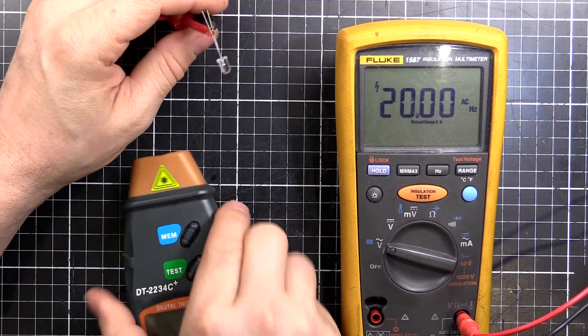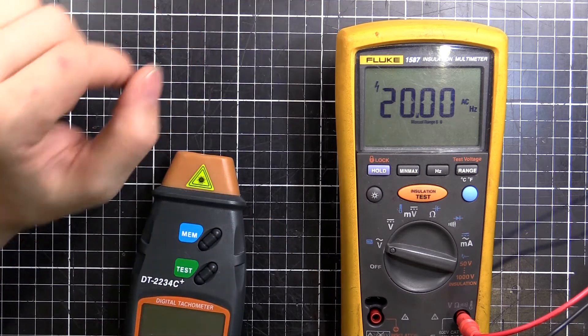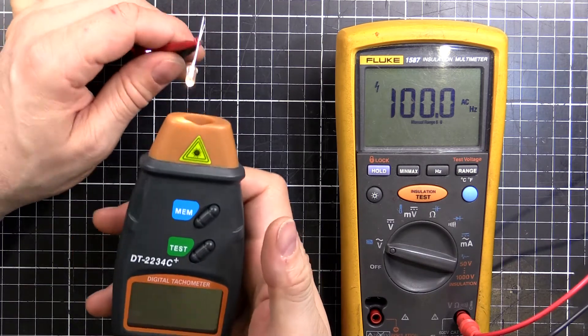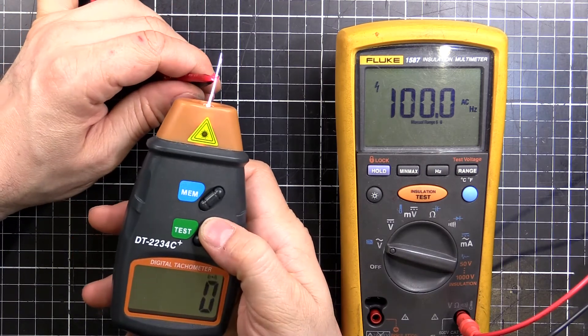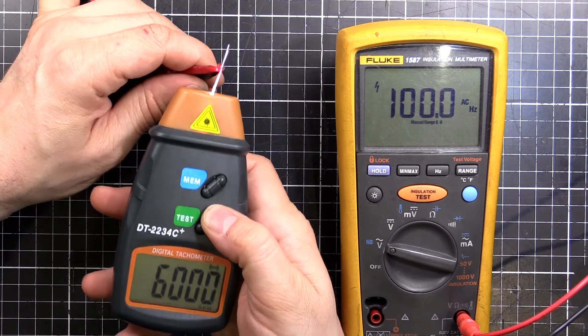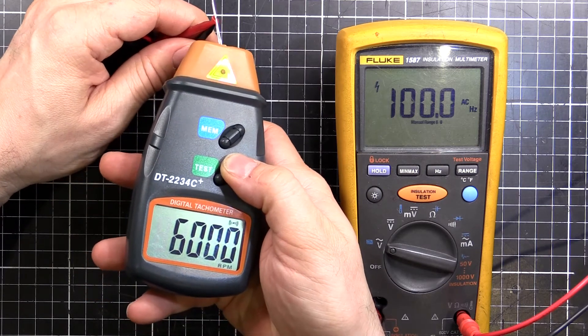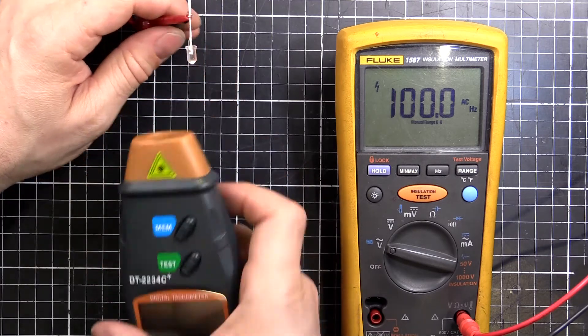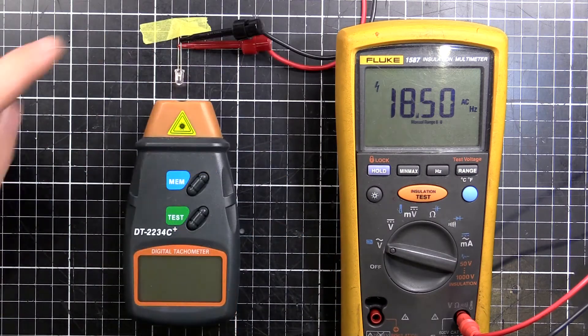Let's turn that up to another number and we'll see how it goes. Okay, now we're at 100 Hertz, you can't actually see it flashing, it's too quick now. But we'll see if we can pick it up. 6000, perfect, that's spot on.